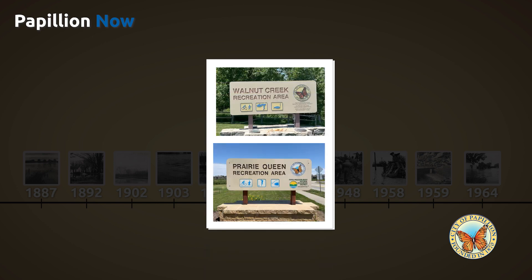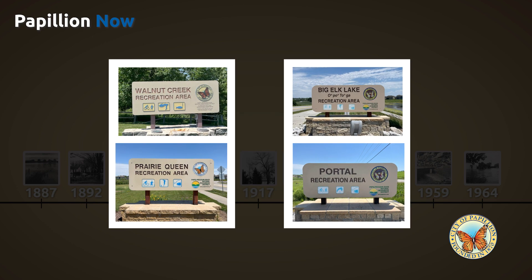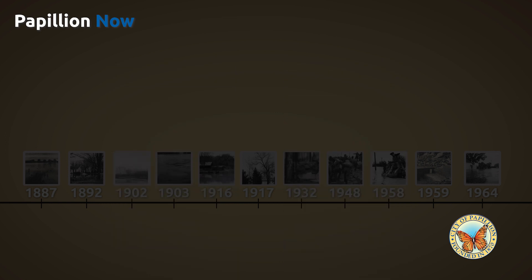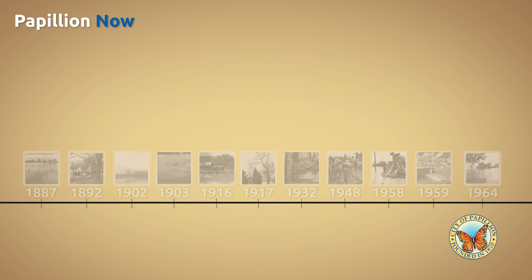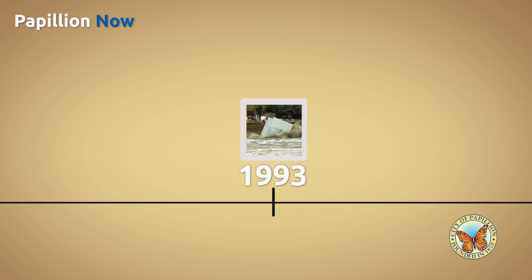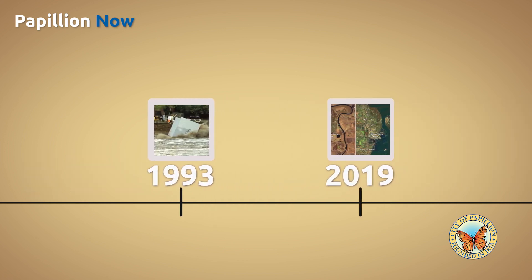Papillion has four dam sites: Walnut Creek, Prairie Queen, Big Elk, and Portal. Since the construction of these dams, the worst floods we have had since 1964 were in 1993 and 2019. Though they provide decent protection, the threat of Mother Nature still looms over this system.